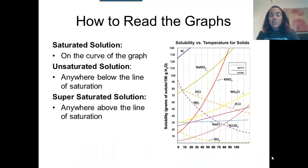Now let's look at that graph again. Remember that on the line are the saturated solutions. Anywhere below the line is unsaturated, and anywhere above the line is supersaturated. Now on the graph, there are two different types of lines.